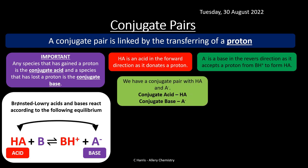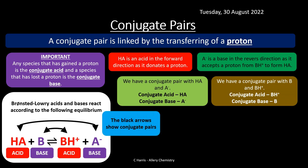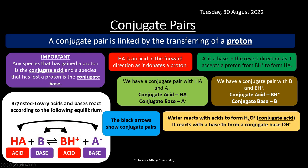The conjugate pair is basically HA and A−: the conjugate acid is HA, and the conjugate base is A−. We also have another conjugate pair: B and BH+. BH+ would be the conjugate acid — the proton has to be released from that to form B — and B would accept the proton to form BH+, making it definitely a base. So these are conjugates.